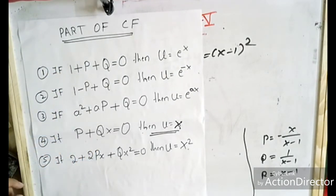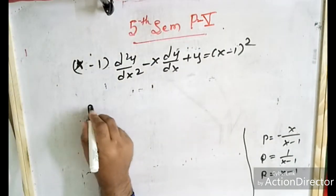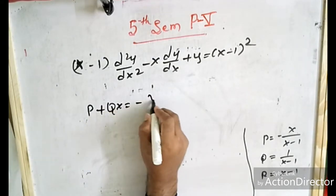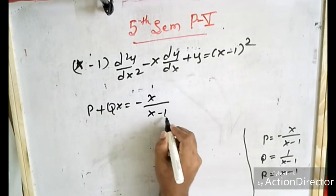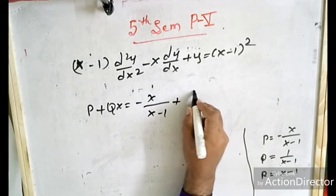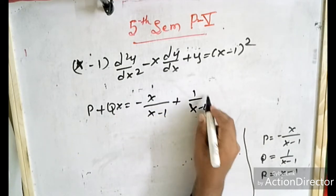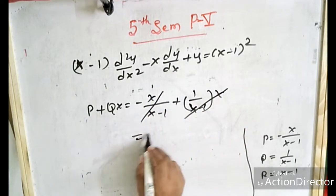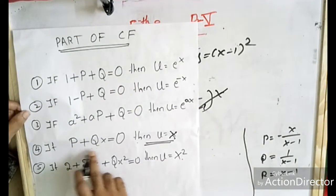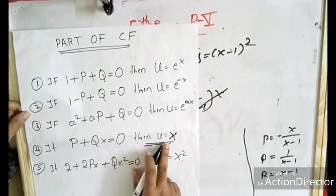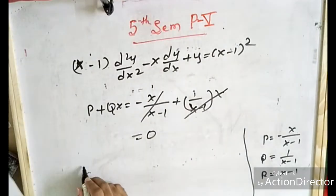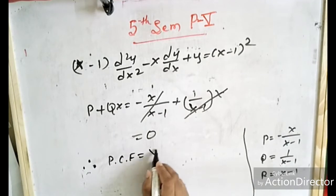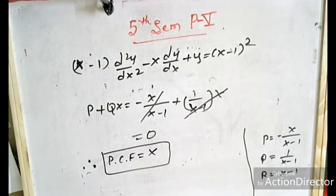Checking: P + Qx equals 0. That is, minus x/(x minus 1) plus [1/(x minus 1)]·x. The x terms get cancelled, and plus and minus cancel, giving 0. So when P + Qx equals 0, the part of the complementary function is u equals x. Therefore, the part of the complementary function equals x. This is the answer — 2 marks.